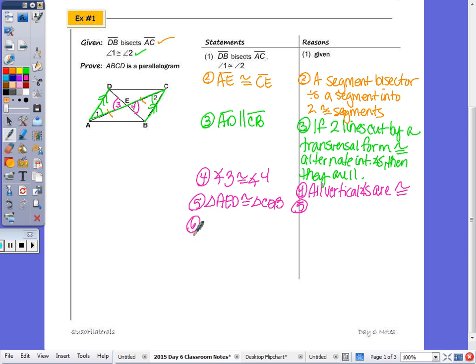And I'm going to say AD is congruent to BC, as we just talked about, by CPCTC. By which shortcut are those two triangles congruent?